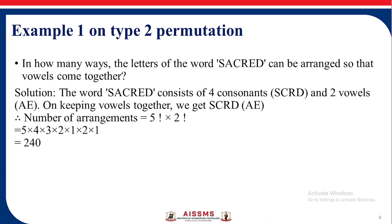Example: In how many ways can the letters of the word SACRED be arranged so that the vowels come together? The word SACRED consists of 4 consonants S, C, R, D and 2 vowels A, E. Keeping the vowels together, we treat A-E as one unit, giving 5 elements. The arrangements are 5 factorial into 2 factorial = 240.